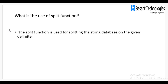What is the use of the split function? The split function is used for splitting a string based on a given delimiter. For instance, if you have a column with full names containing first name and last name, and you want only the first name, you can use the split function. Delimiters are separators — if the name is separated by a space, comma, or semicolon, that character represents the delimiter.